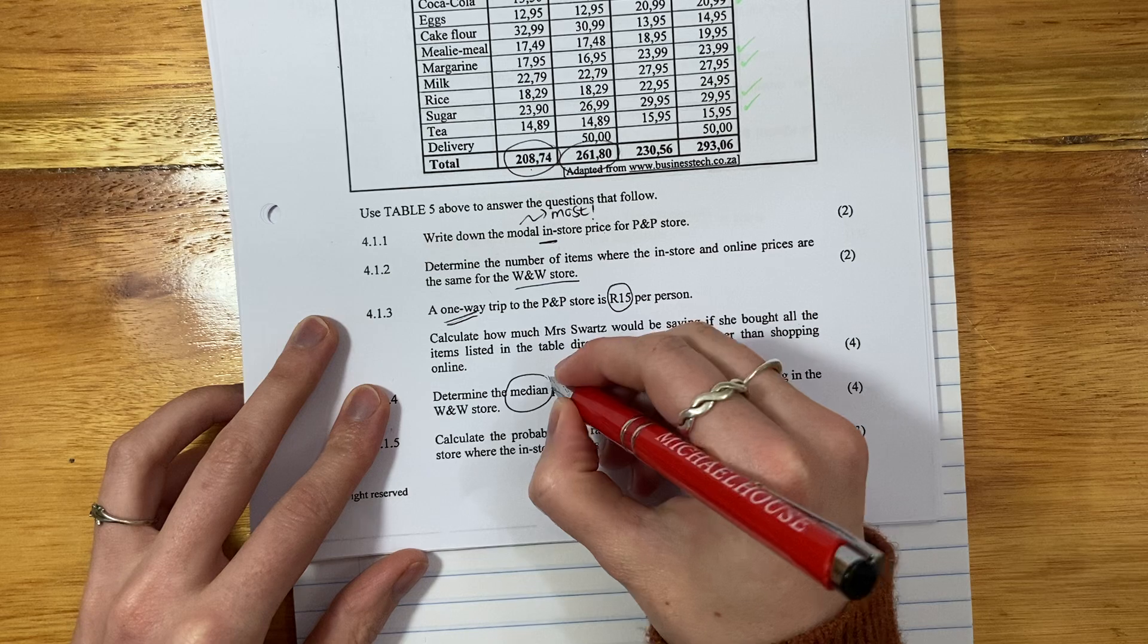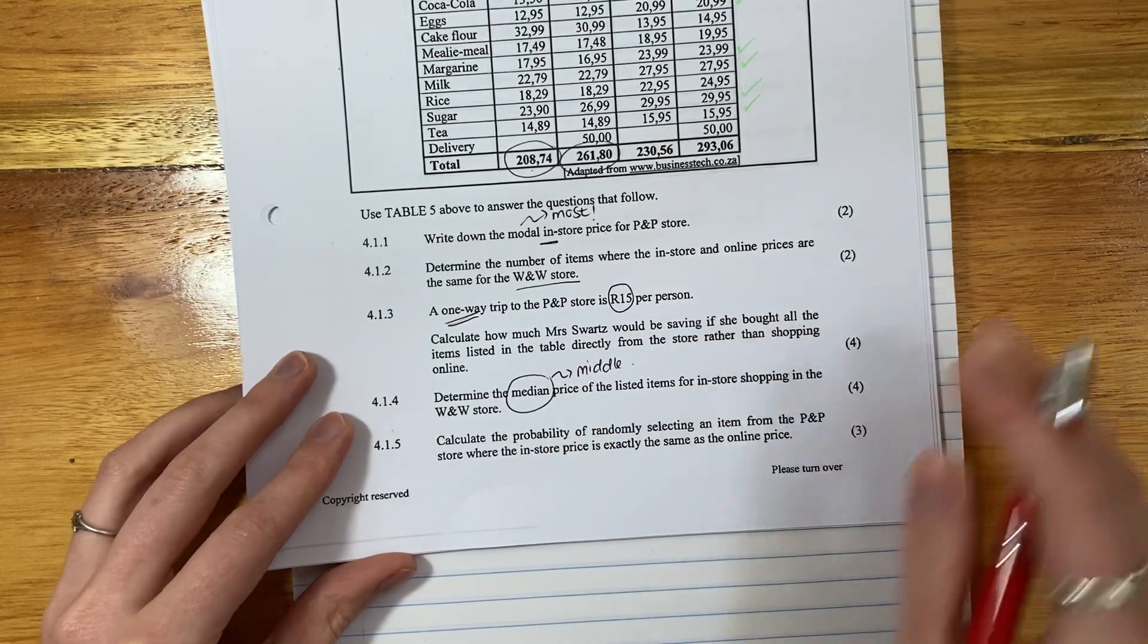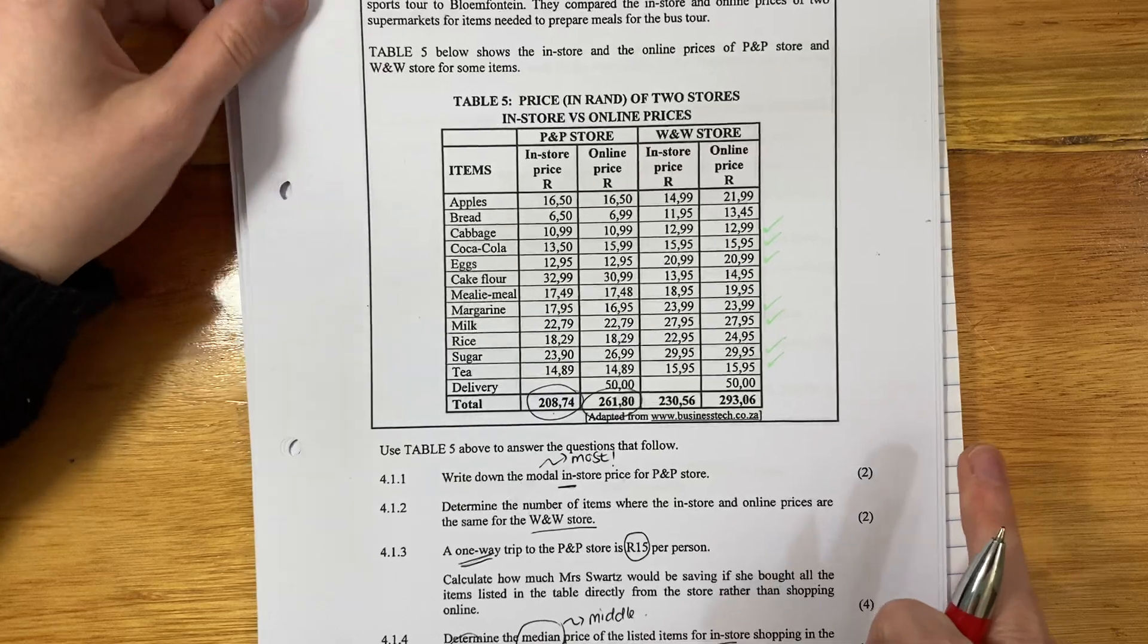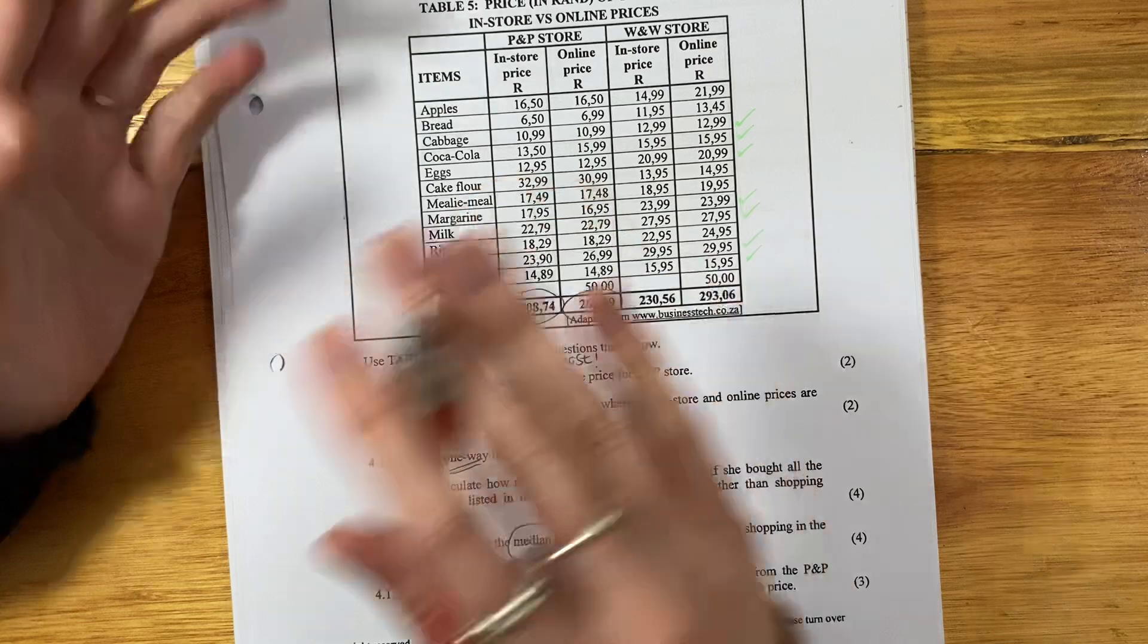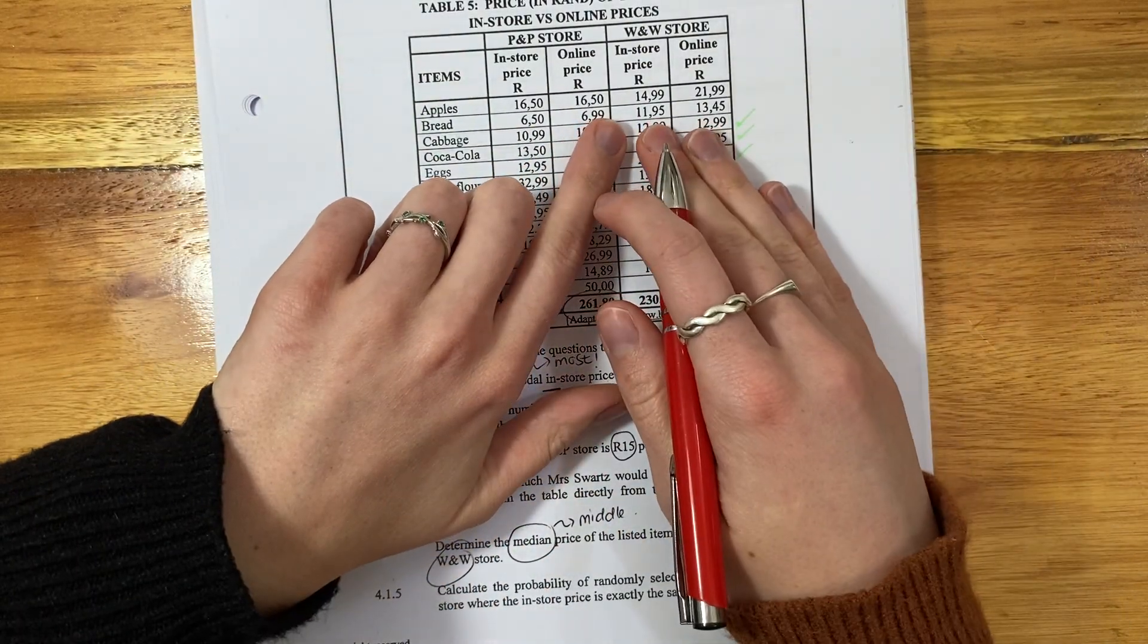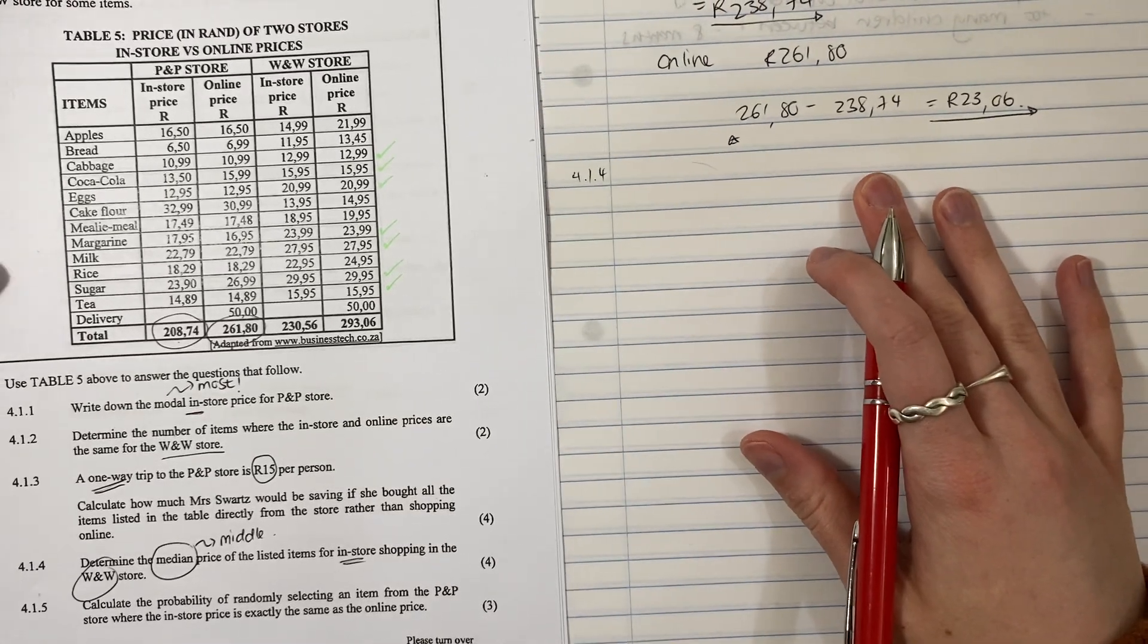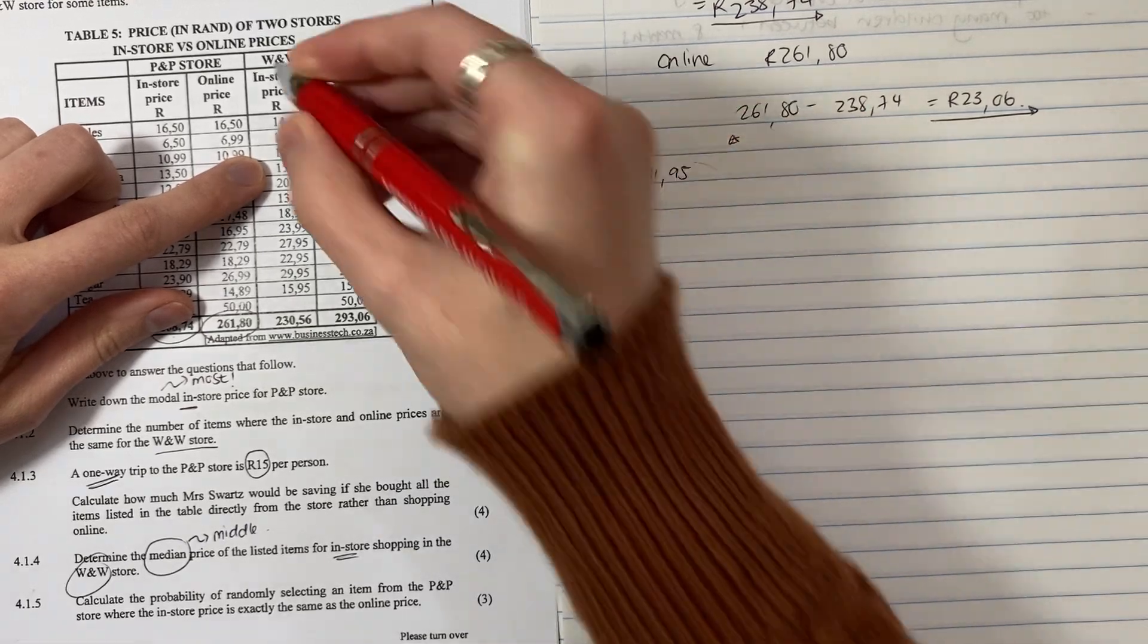Then it says determine the median. What does median mean? It means middle. Price of the listed items for in-store shopping in the W&W store. To get the median, it's a bit of work, because we have to write them out from the smallest number to the largest number. Let's order it from the smallest number to the largest number. What is our smallest number?